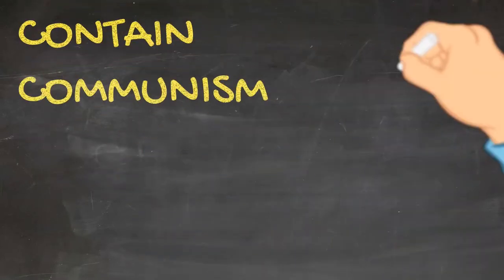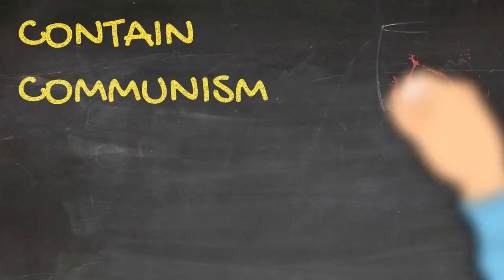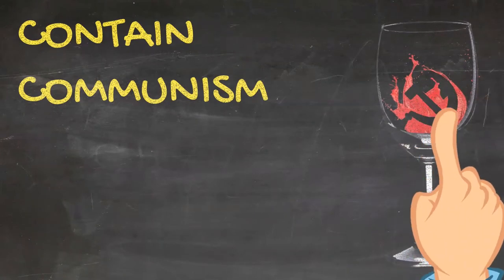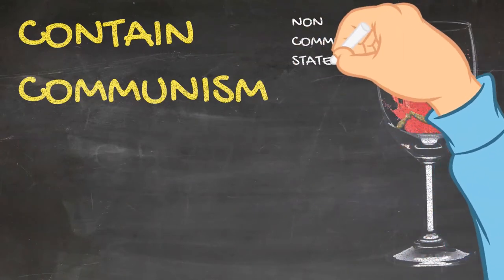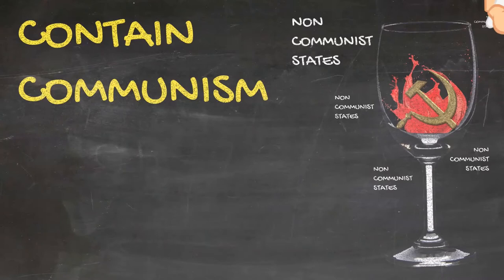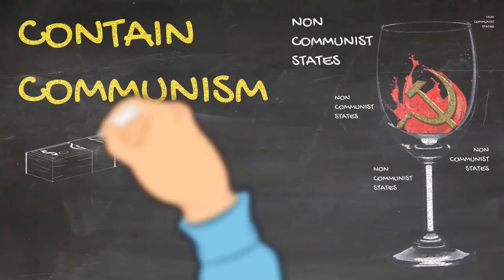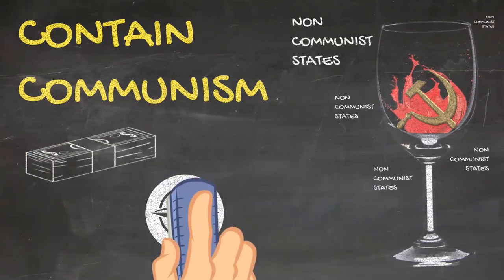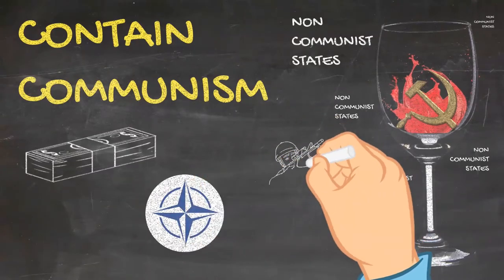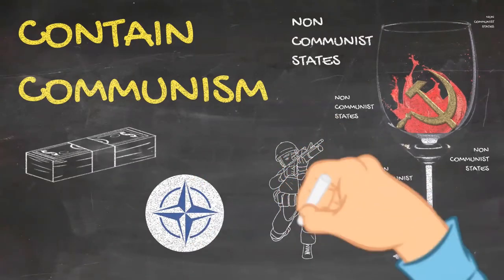Consequently, the U.S. set about attempting to contain communism to those areas it already existed, by surrounding it with strong non-communist states through a mix of financial aid, as seen in the Marshall Plan, strategic partnerships, as seen with NATO and CETO, and war, as seen in Vietnam and Korea.